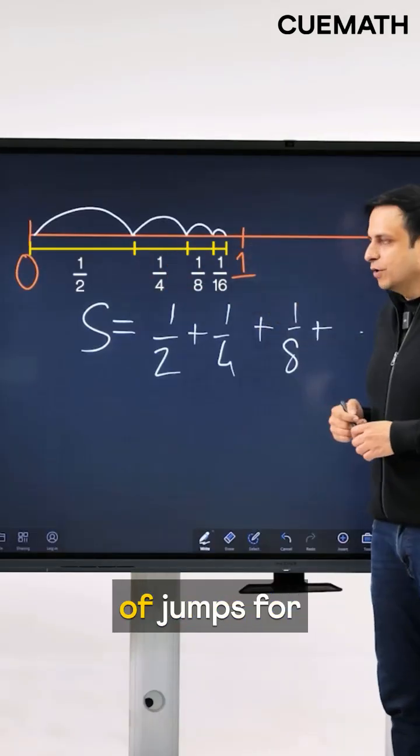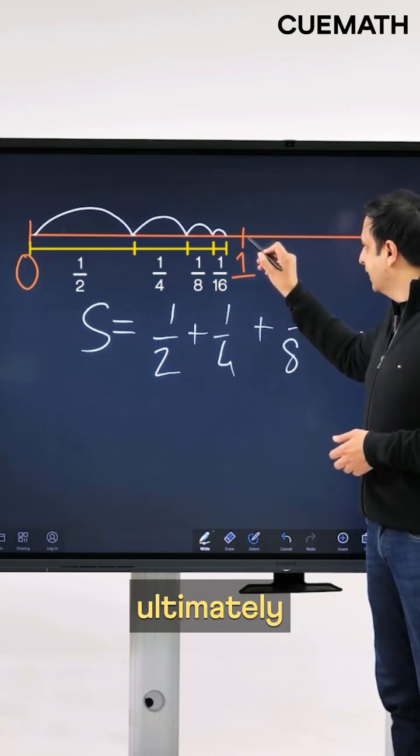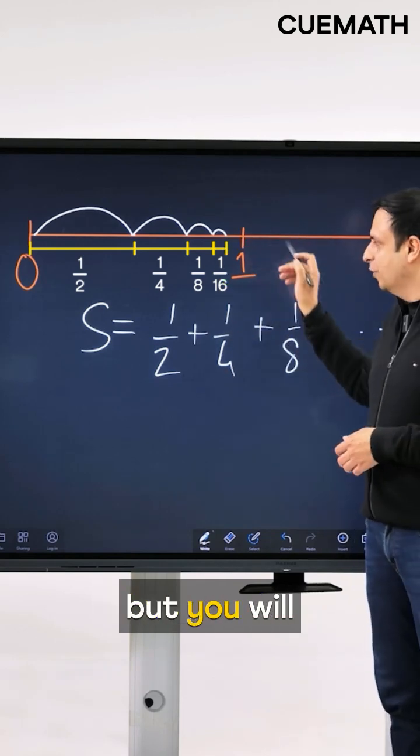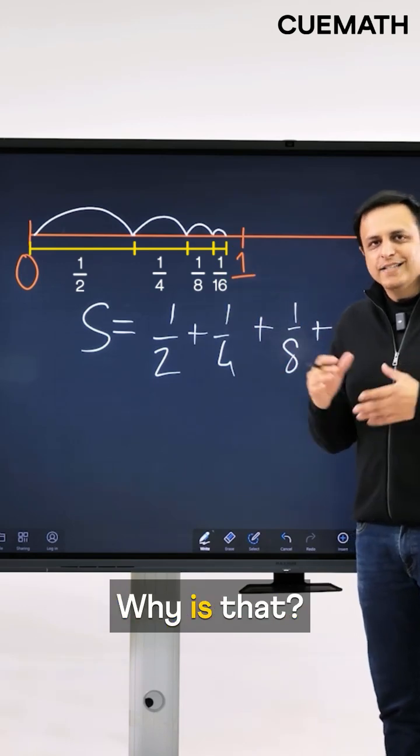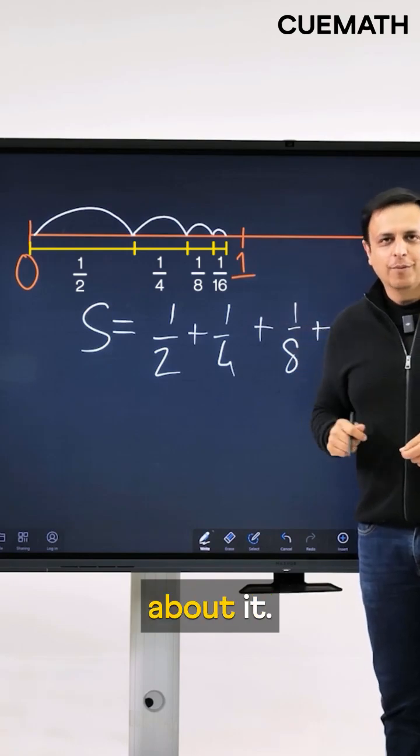So if you continue this sequence of jumps for infinitely many times, you will ultimately get closer and closer to 1, but you will never cross 1. Why is that? Now let me show you three different very cool ways to think about it.